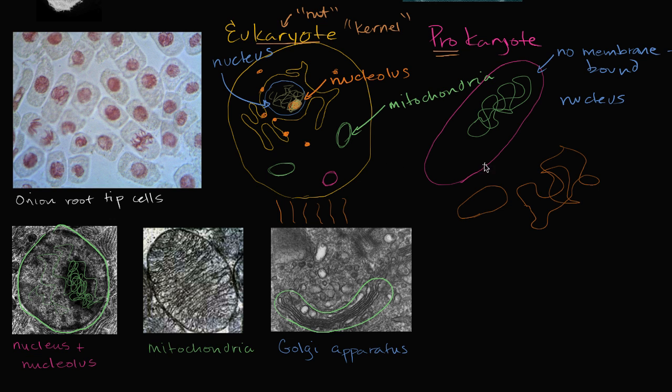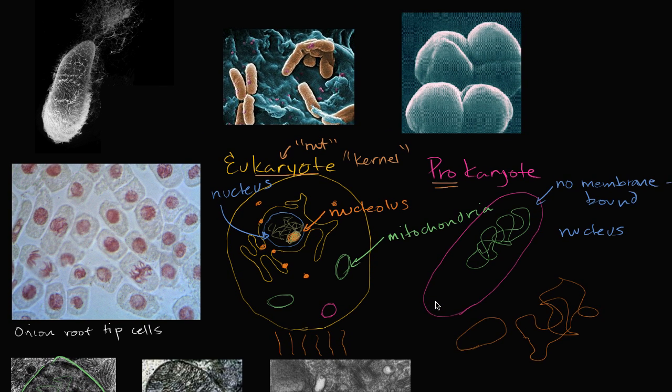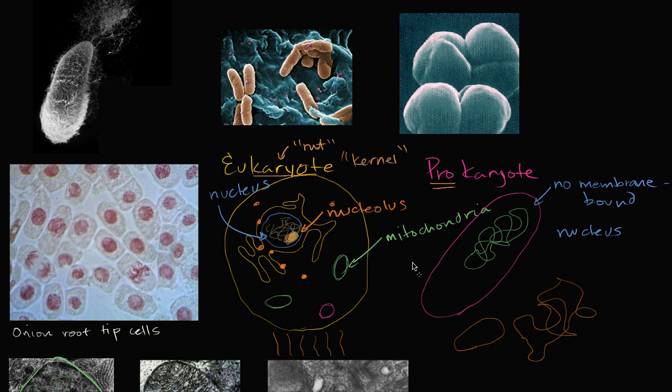So now that we know the key distinctions, what are examples of eukaryotes? Well, eukaryotes include most of what we interact with on a daily basis, or we think we're interacting with on a daily basis. This includes all multicellular organisms. So multicellular organisms. So I'm thinking animals, plants, fungi. It includes protists. This is a paramecium right over here. This is eukaryotic. It's going to have a membrane-bound nucleus and other organelles.